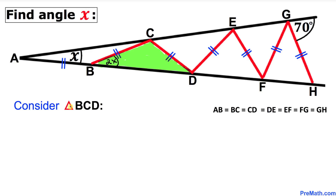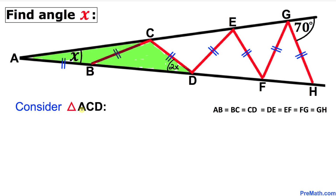Let's focus on the next triangle, triangle BCD. We know this is an isosceles triangle since BC equals CD. If this angle is 2X, this angle has got to be 2X as well. Now focusing on triangle ACD, angle C is an exterior angle. So this exterior angle equals the sum of opposite interior angles X and 2X, giving us X plus 2X equals 3X.